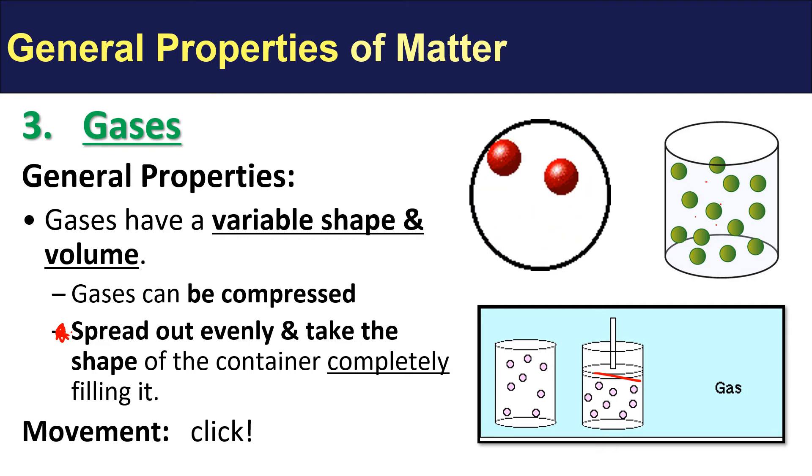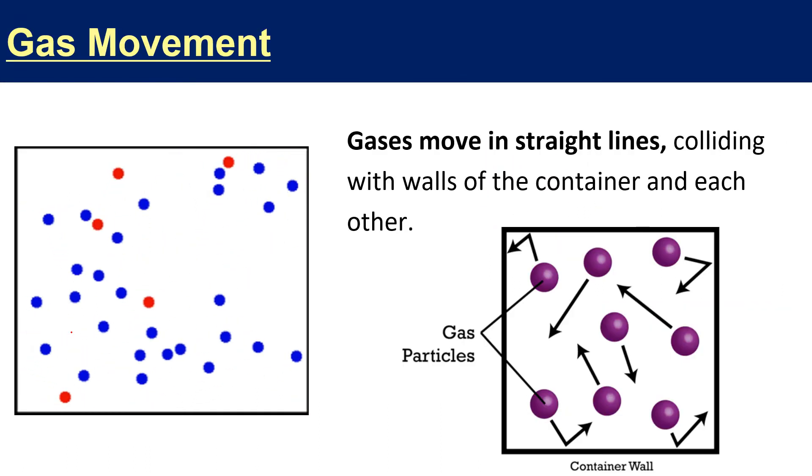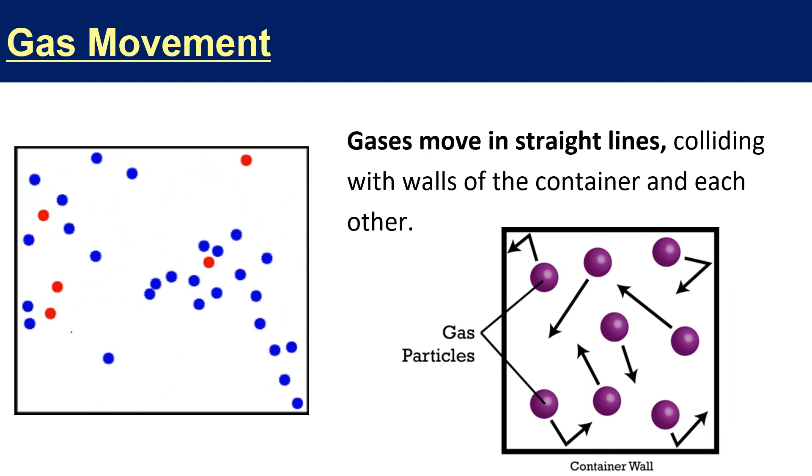If you have ever sprayed perfume or cologne in the air, you know that you don't smell it immediately across the room, but as a little bit of time goes on we have diffusion that happens for gases, and our particles will spread out evenly so they are all equidistant from one another.